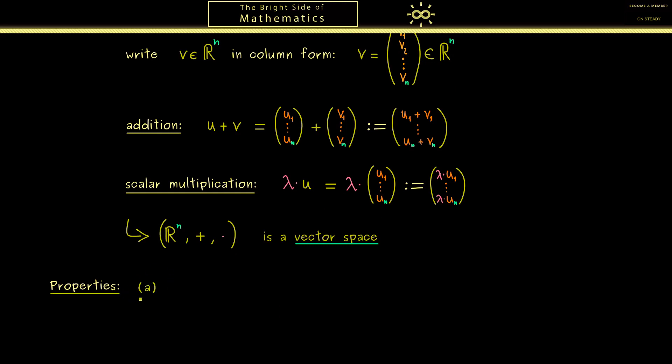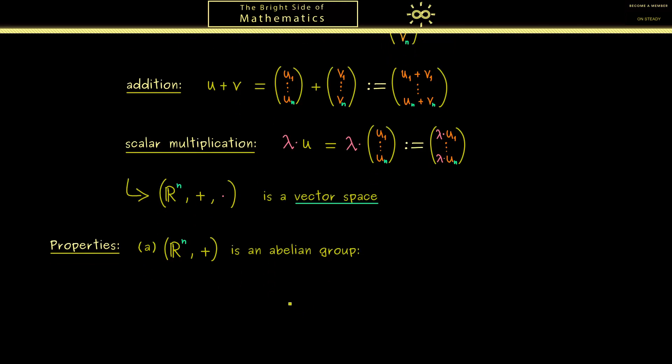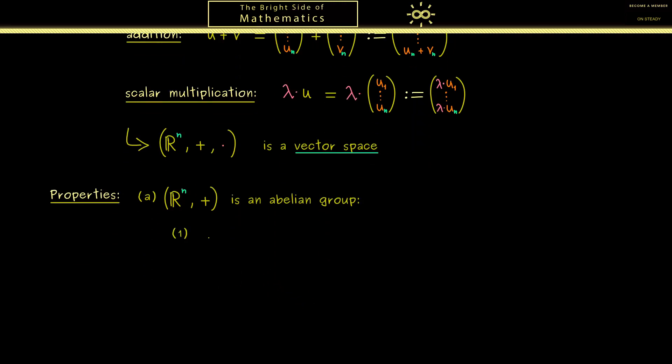Indeed, now we will talk about the eight defining properties of a vector space. The first four just describe that R^n together with the addition is an abelian group. This means we have a group that is also commutative.